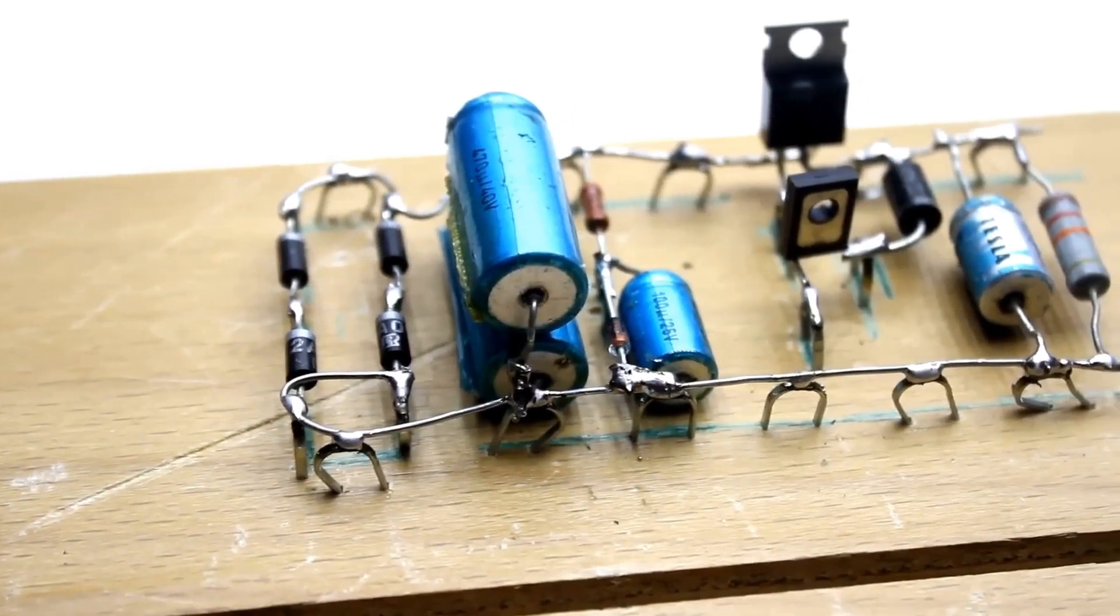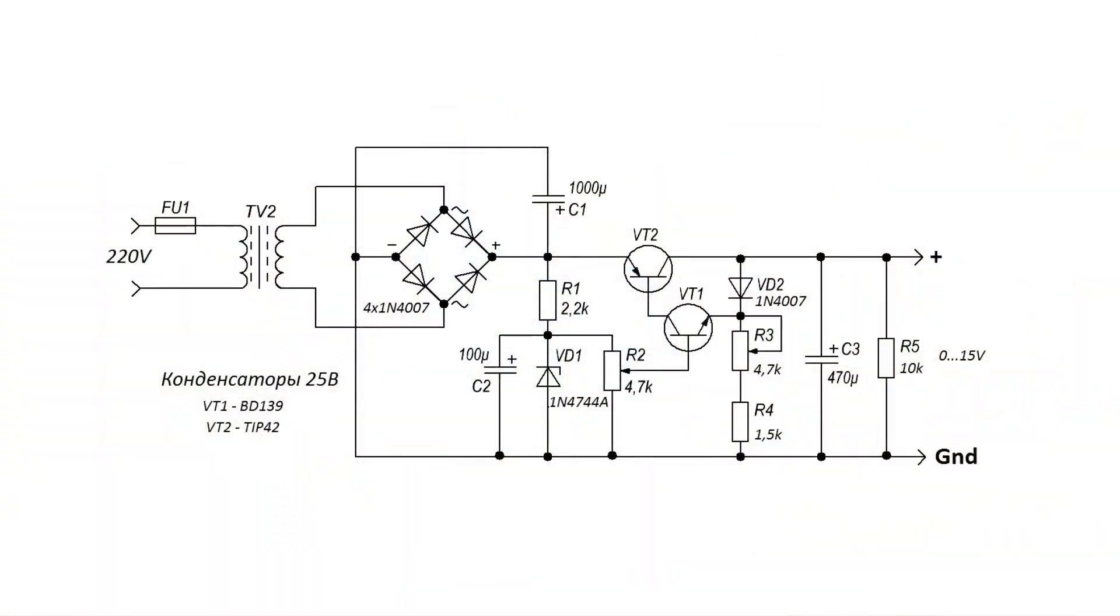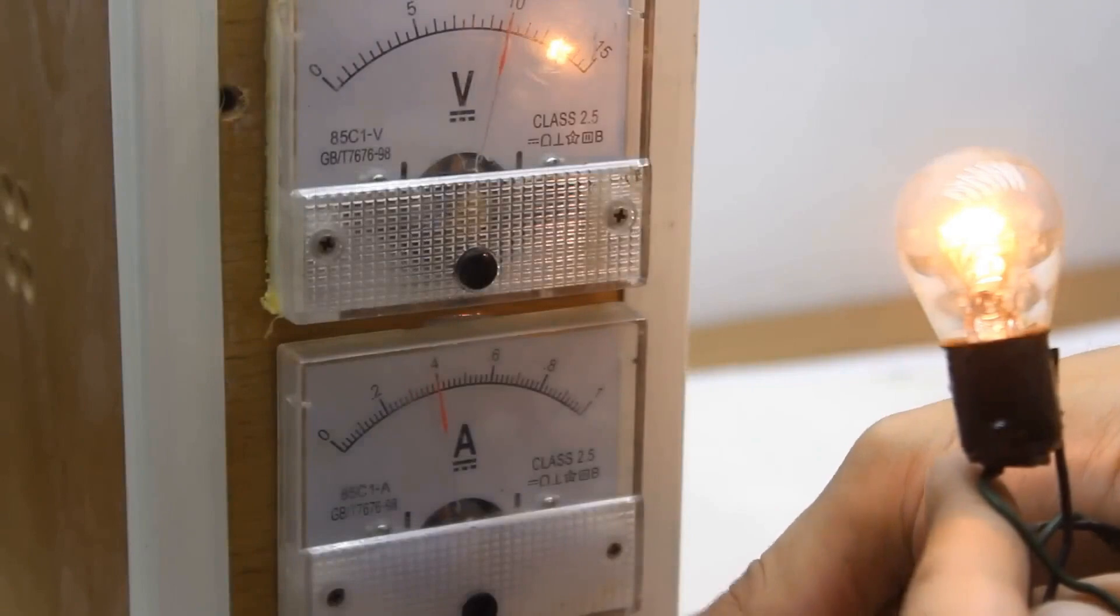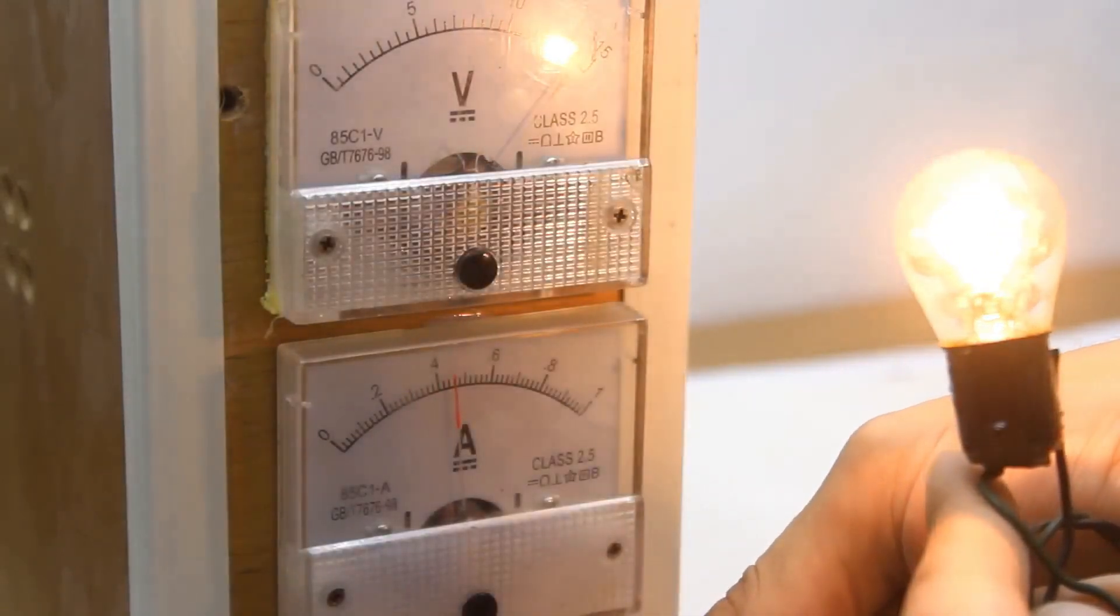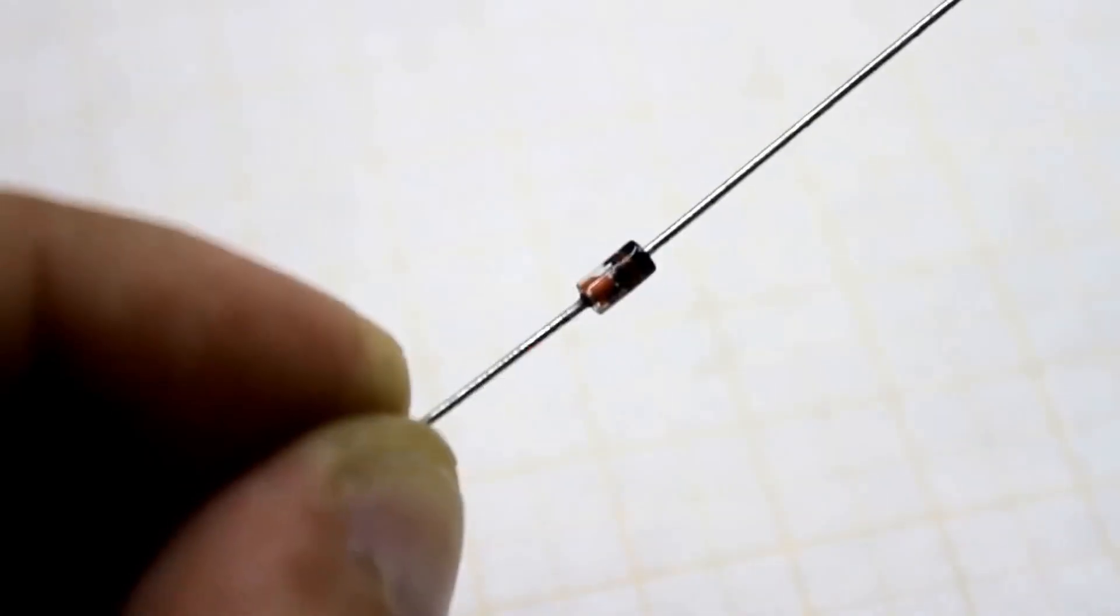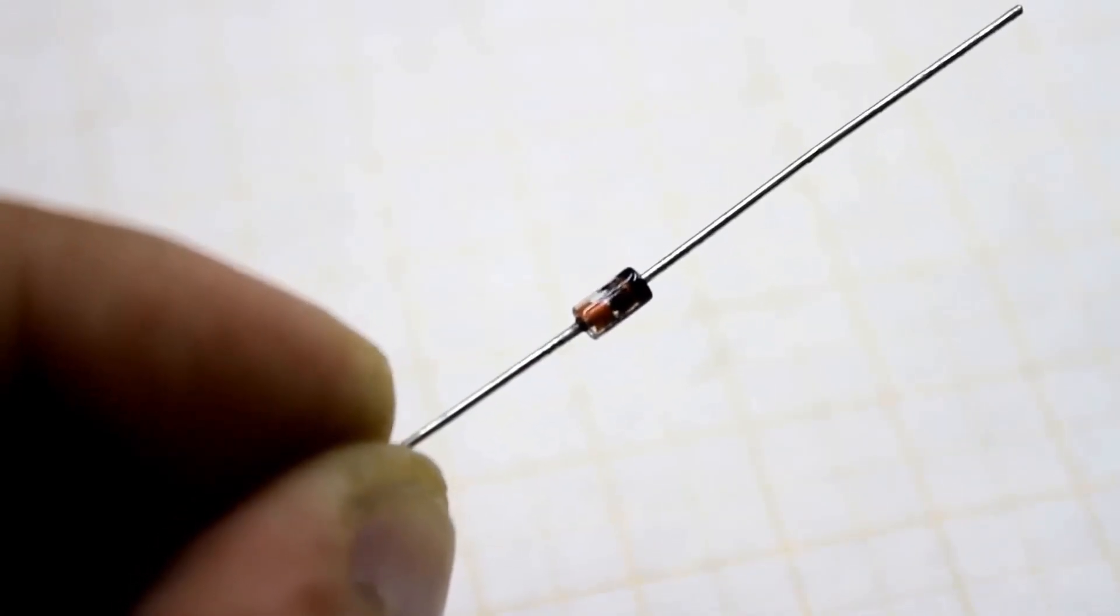It's a linear power supply built using just two transistors. It provides smooth regulation of output voltage within the range from 0 to 15 volts. You can increase the voltage by replacing the Zener diode with a higher voltage one. It sets the upper limit of the output voltage.